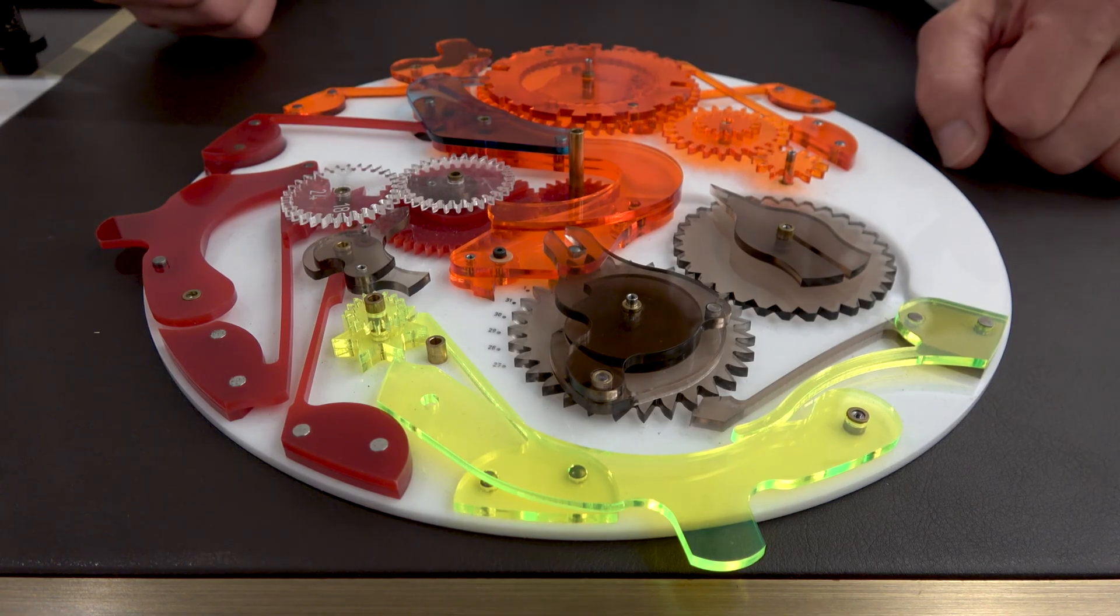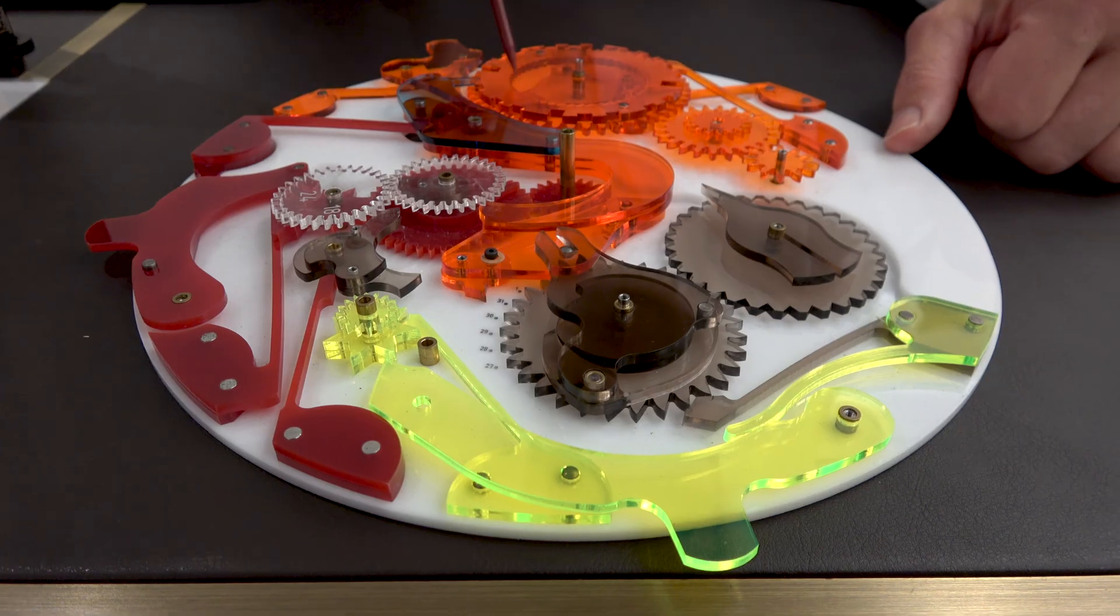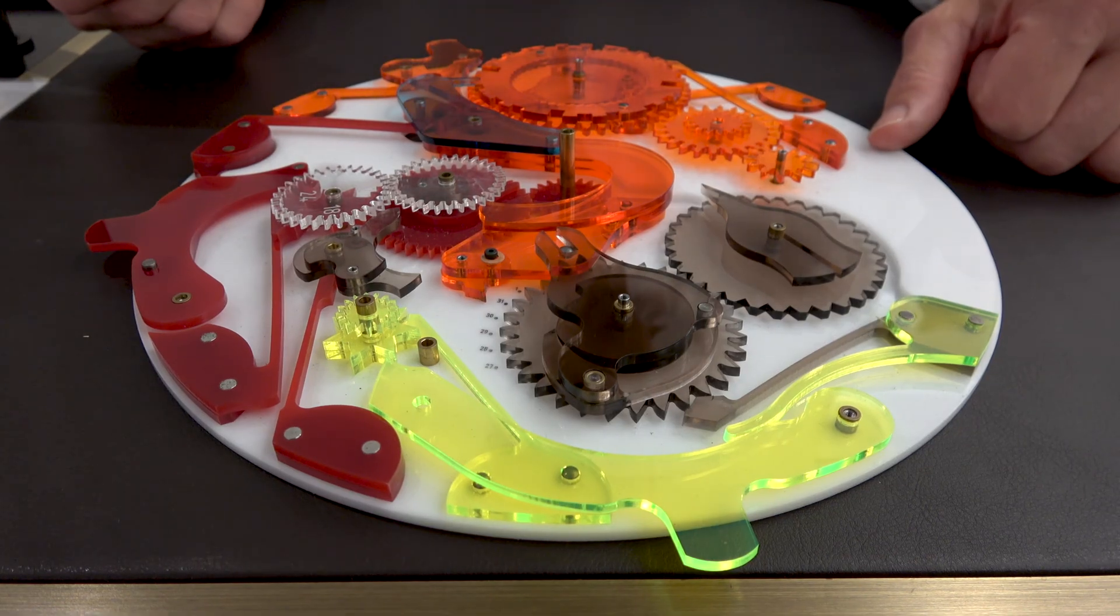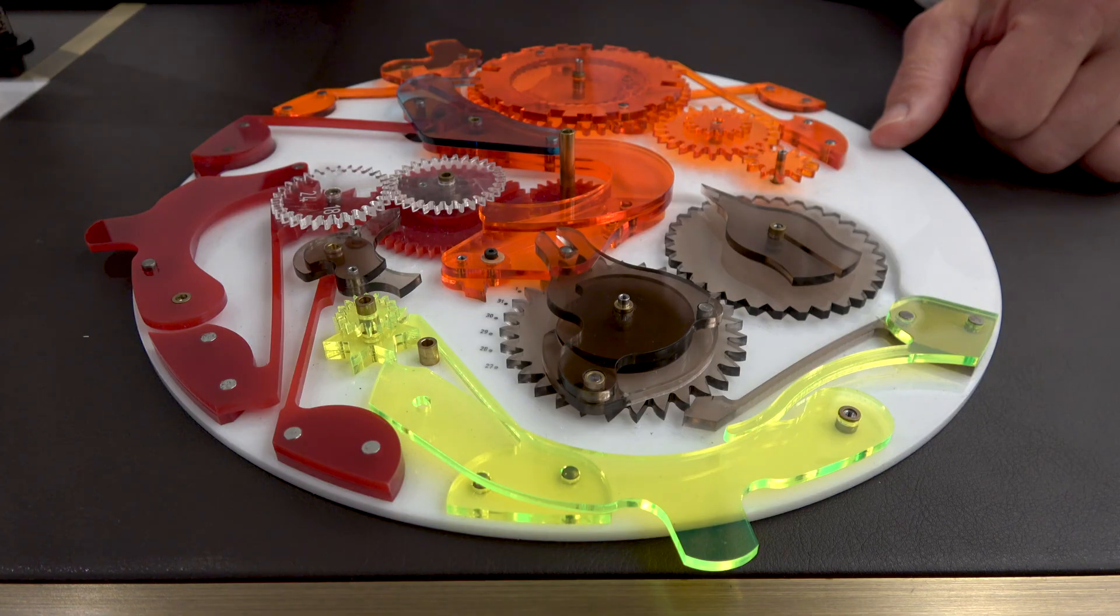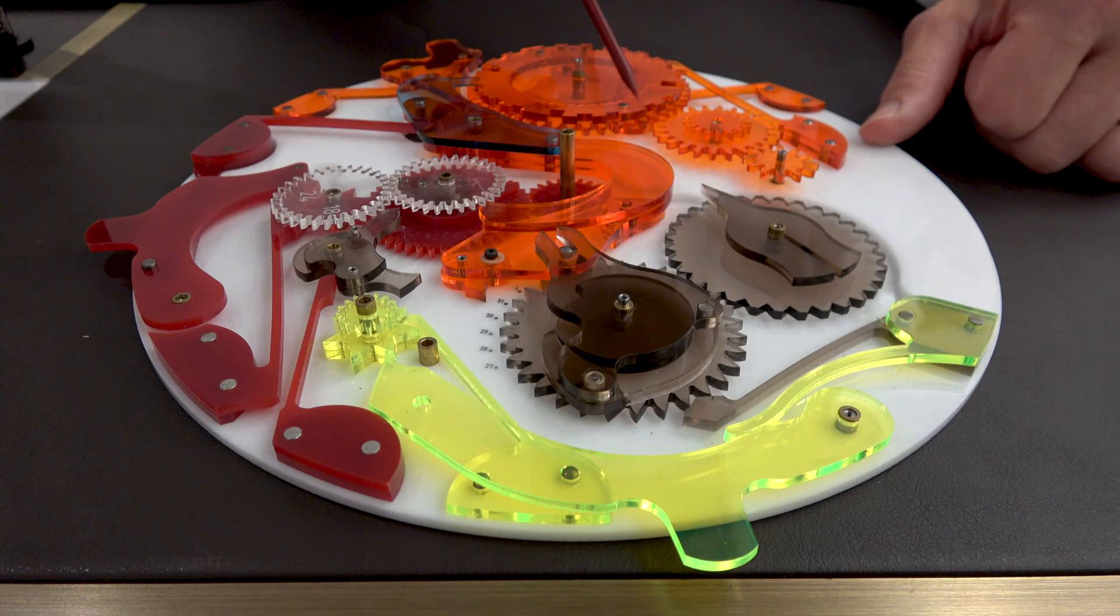So I have a model of a perpetual calendar. The brain of the watch is this wheel right here. We call this the cam of 48 because leap years occur once every four years and you'll have 48 months in that four year cycle. So all of the 48 months are represented on this wheel.